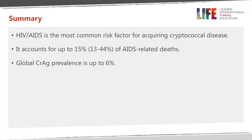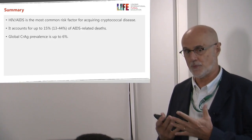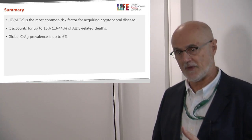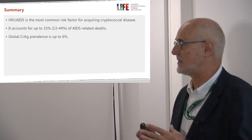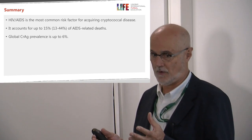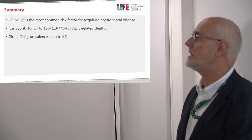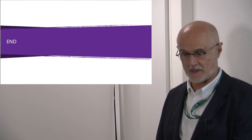In summary, HIV and AIDS appear to be the most common risk factors for acquiring cryptococcal disease, reflecting very poor host immunity. Cryptococcus accounts for approximately 15% of AIDS-related deaths, and the global prevalence of cryptococcal antigenemia appears to be up to 6%. Thank you very much.